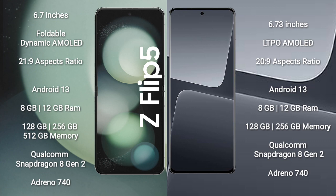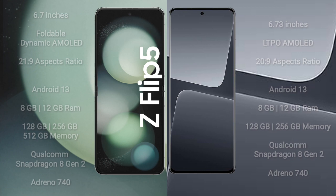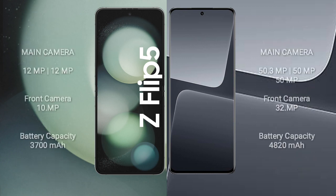Xiaomi 13 Pro comes with 8GB or 12GB RAM, 128GB or 256GB or 512GB internal storage, a Qualcomm Snapdragon 8 Gen 2 processor, and GPU Adreno 740.